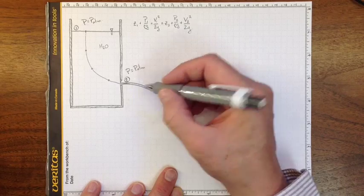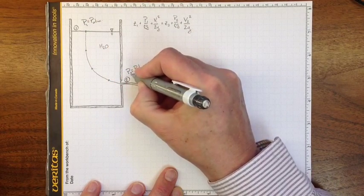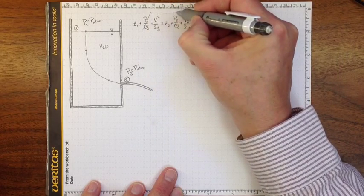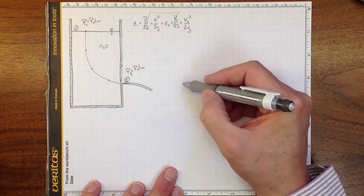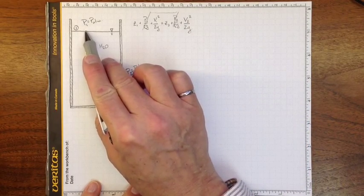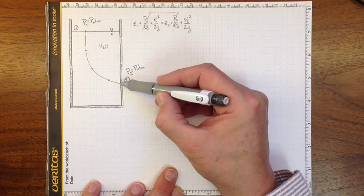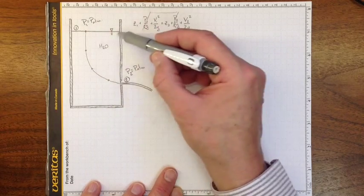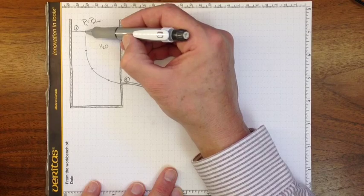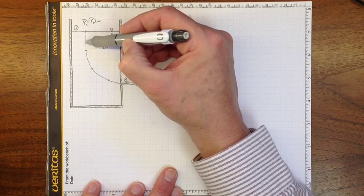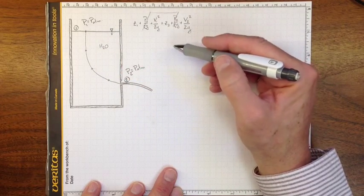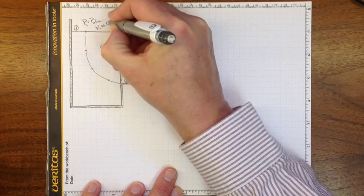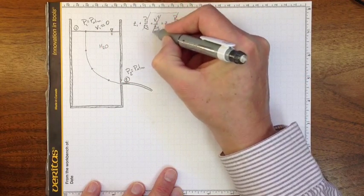So p1 and p2 are the same. p1, p2, both atmospheric pressure. So the pressure terms will cancel out. Now again, because I chose position 1 up here on the surface, as long as that hole is really small compared to the cross-sectional area of this whole tank, then the velocity at which this surface is moving down is really small, very close to 0. So v1, very close to 0. So I can cancel that one out.